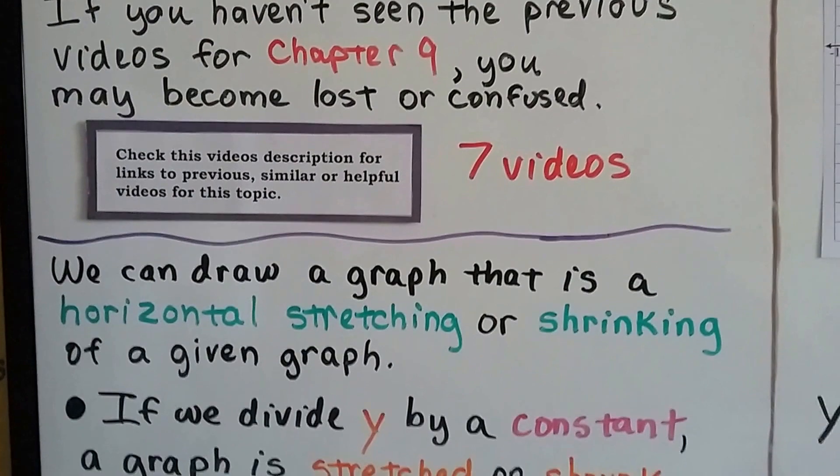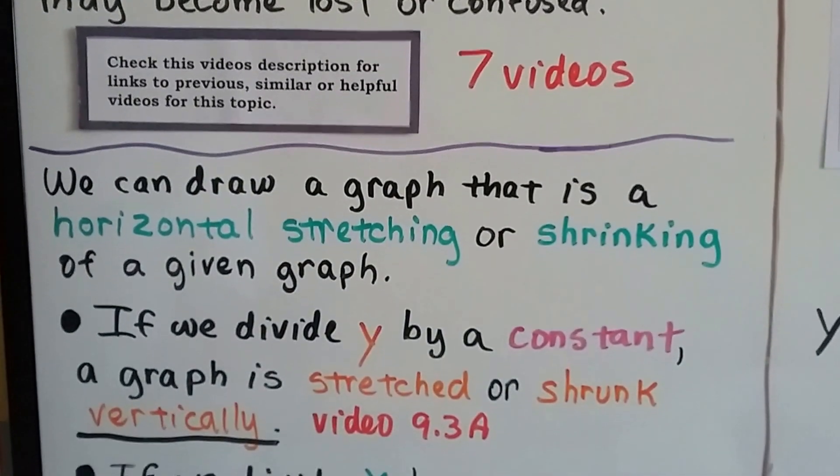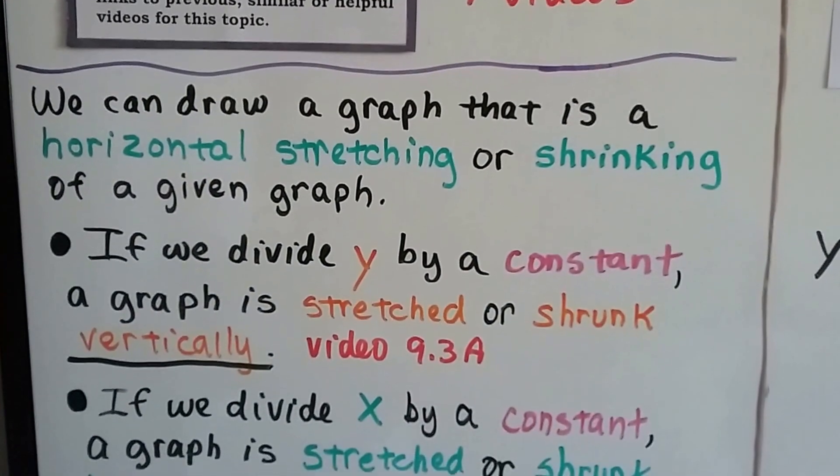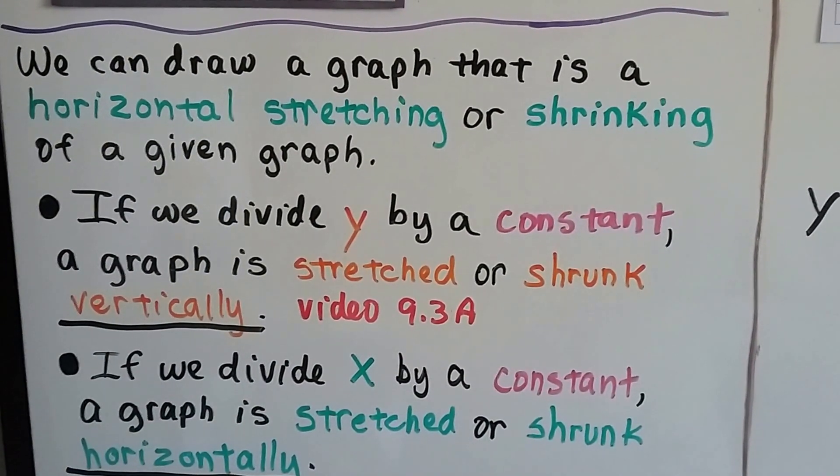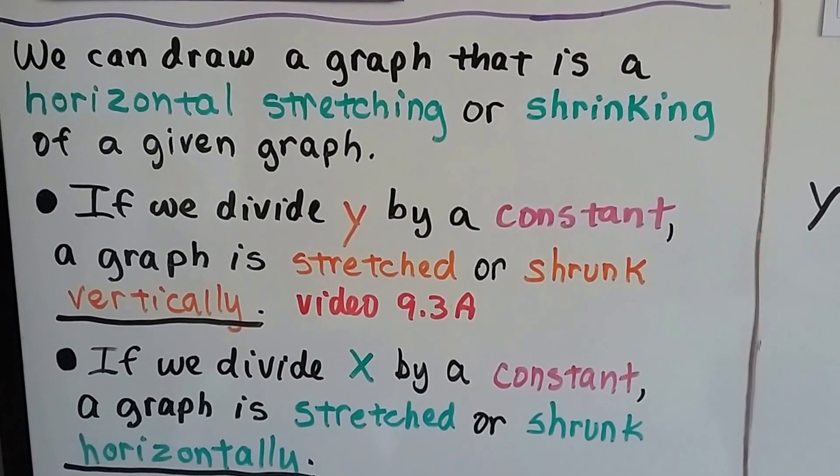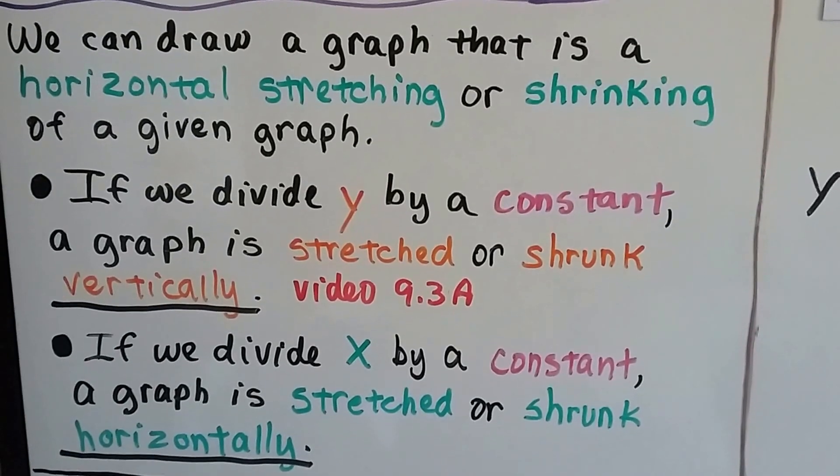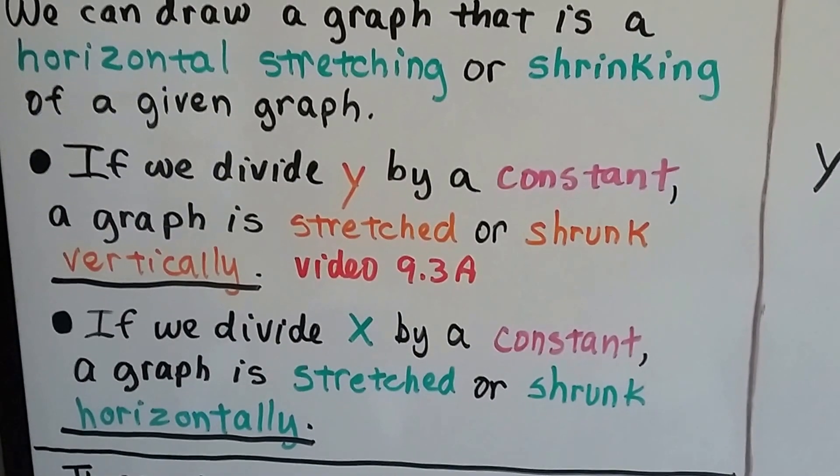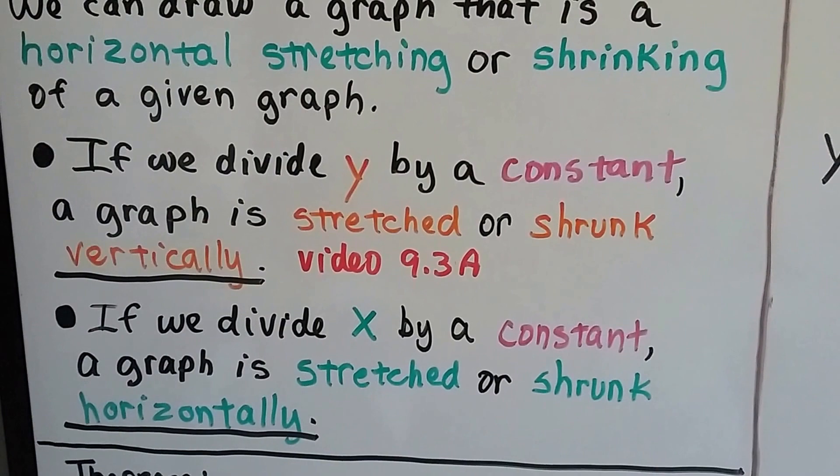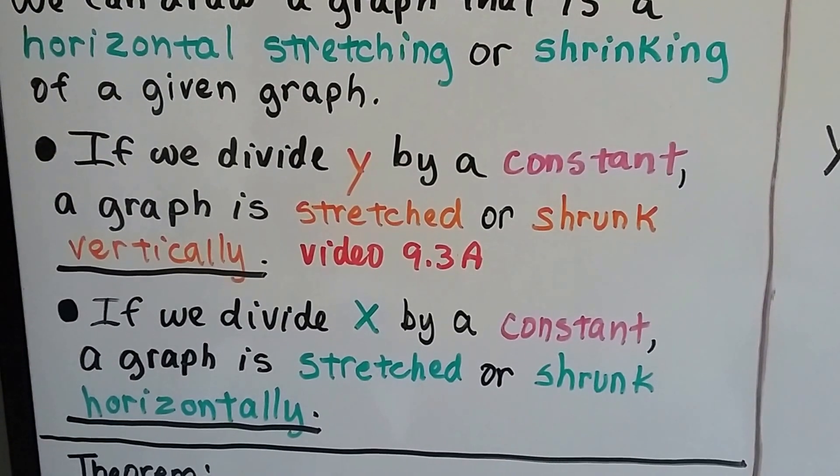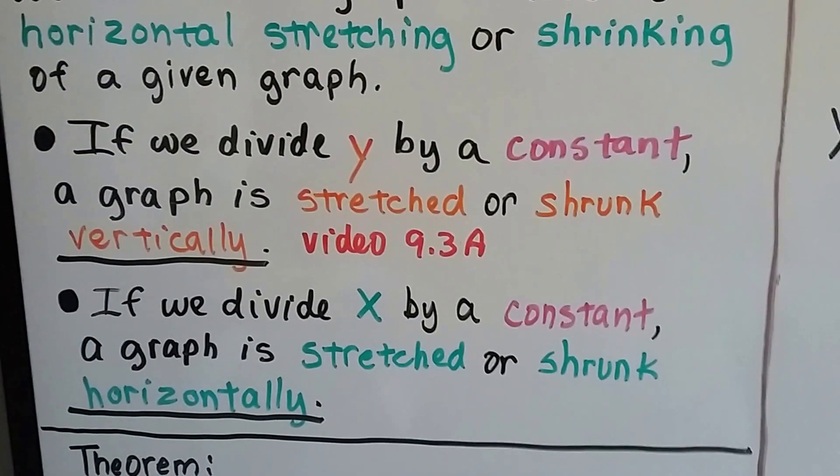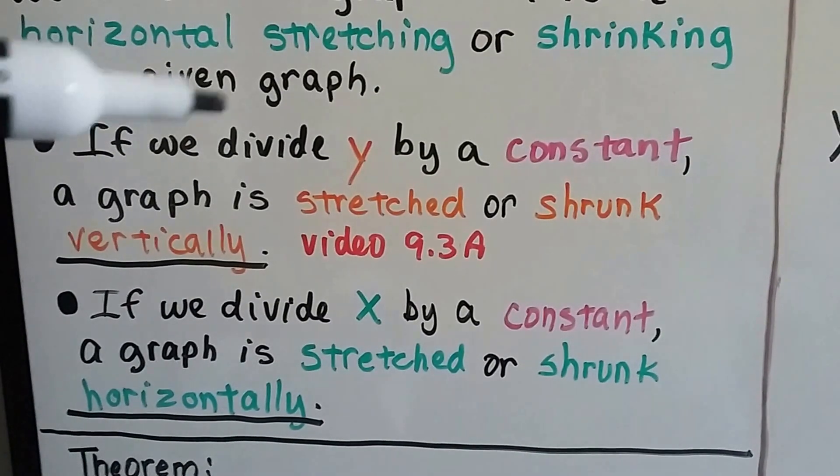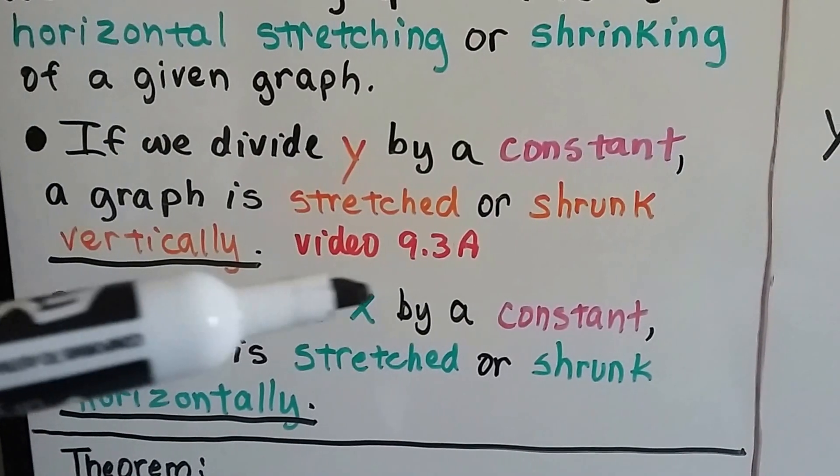We can draw a graph that is a horizontal stretching or shrinking of a given graph, and we learned in the last video, if we divide y by a constant, a graph is stretched or shrunk vertically. That was 9.3a, and that is in the description. You can click on it. So if we just divide x by a constant, a graph is stretched or shrunk horizontally. So for vertically, it was the y. Now it's the x.